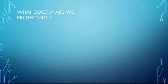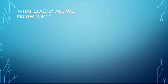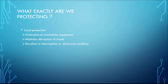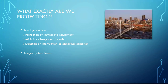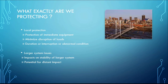In our quest to understand protection systems, there is a question to be asked: what exactly are we protecting? Well, local protection — protection of immediate equipment — to minimize disruption of loads, duration of interruption, or abnormal conditions. We are protecting large cities that depend on substations to supply them continuously. The impact on stability of the larger system is very critical, so we have to protect the potential for distant impact, and also the quality of power delivered to various cities, to make sure that power is delivered continuously with good quality.